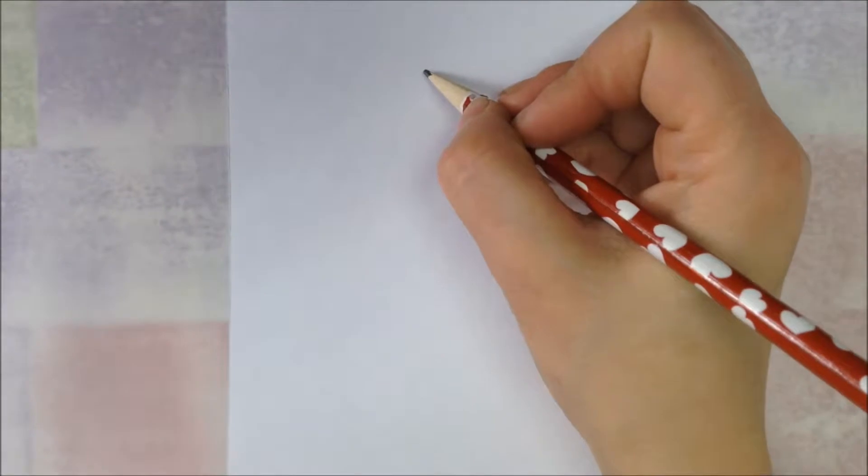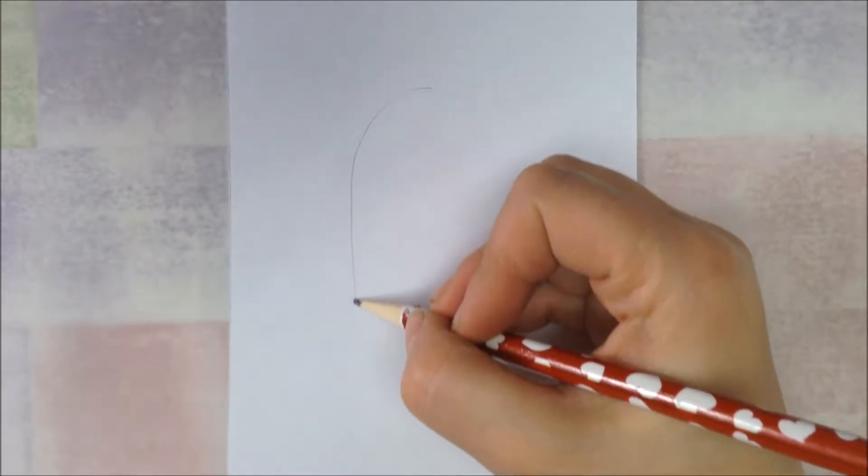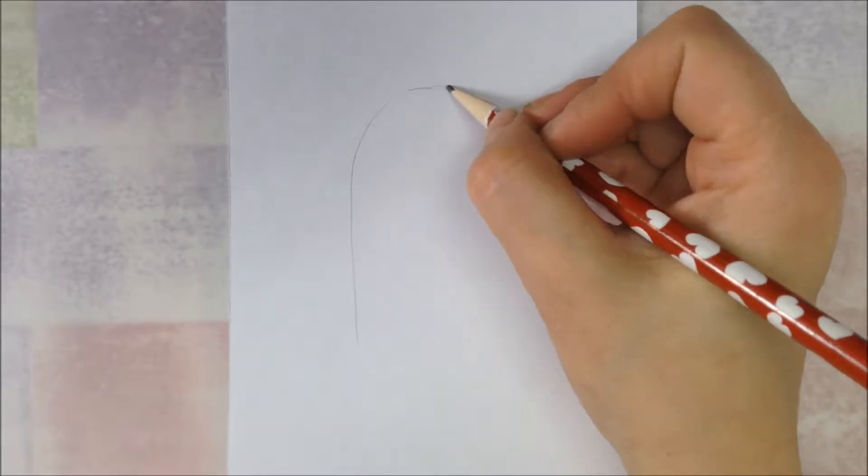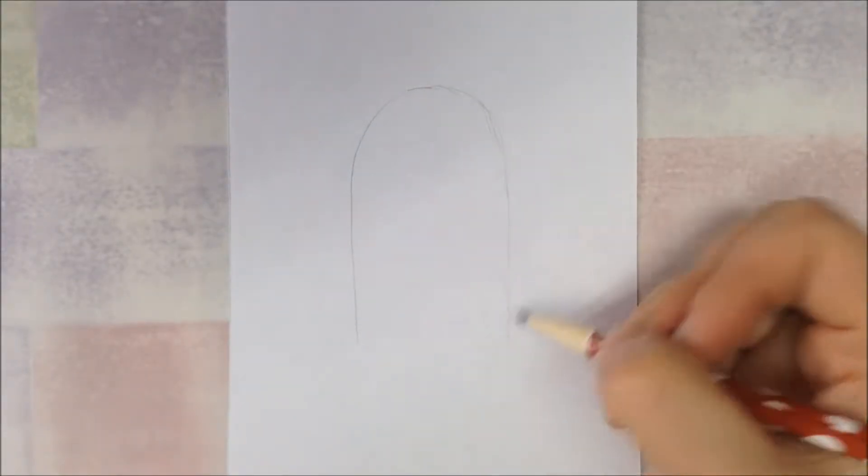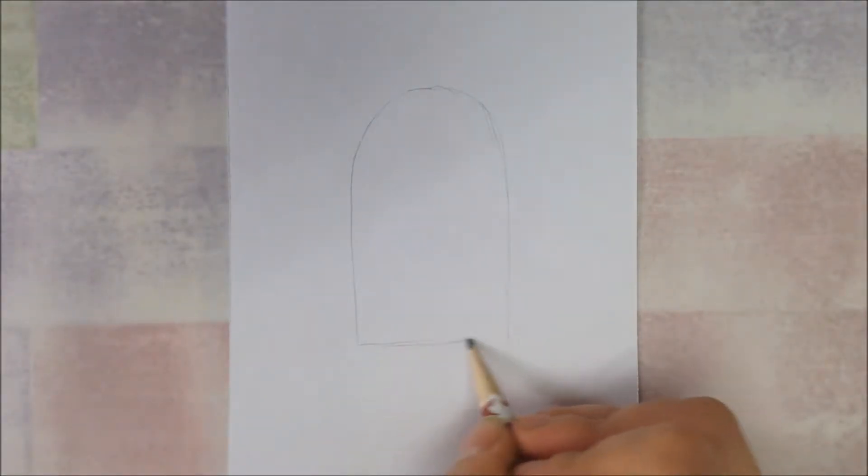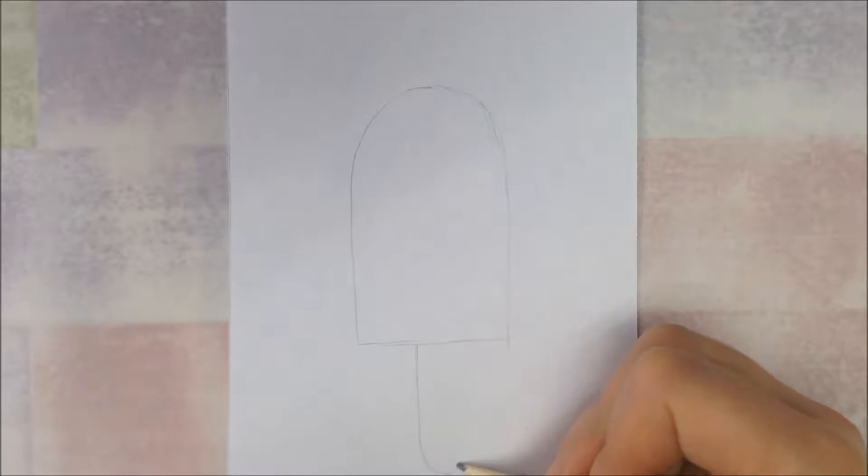We're going to start drawing our popsicle at the top. We're going to draw a curved line down, kind of like half of a rainbow but a lot longer and taller, and then draw the other half. Close it up on the bottom with a straight line, and for the popsicle stick it's the same shape, only smaller and upside down.